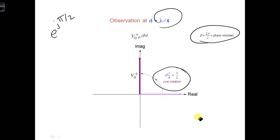And finally, let's draw the voltage phasor at d equals lambda over 2.